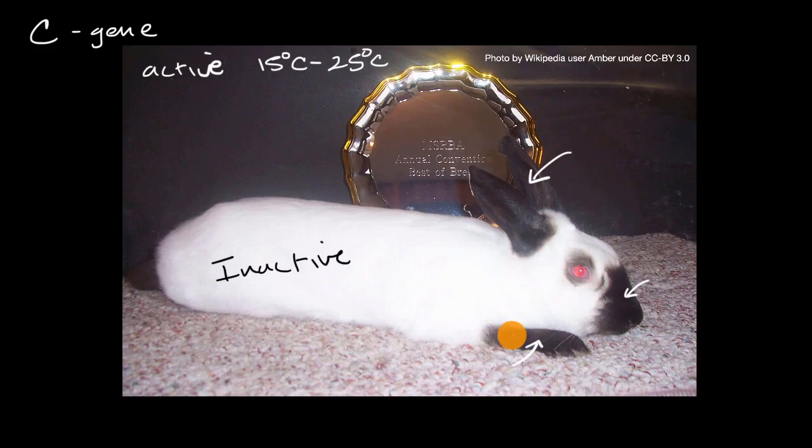How does that make sense? Well, imagine that this rabbit over here was raised at 20 degrees Celsius. The body itself, it's a mammal, it's warm-blooded. It's going to be producing heat. So the body, this area right over here, is going to be warm.